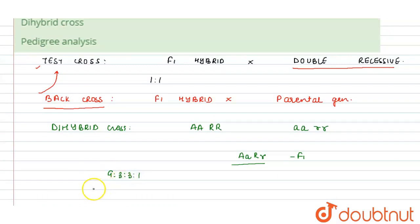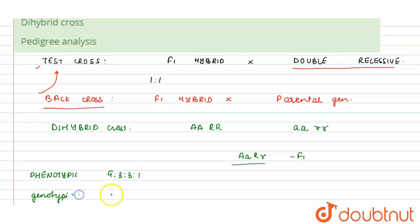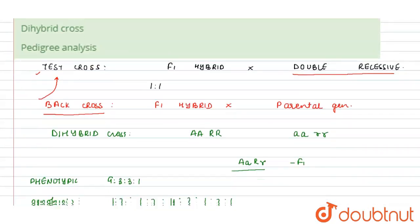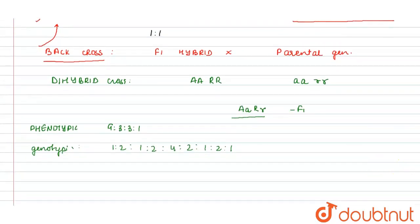That 9:3:3:1 is the phenotypic ratio. If we talk about the genotypic ratio in this condition, the genotypic ratio will be 1:2:1:2:4:2:1:2:1. So this is the genotypic and phenotypic ratio — and this is called the dihybrid cross.